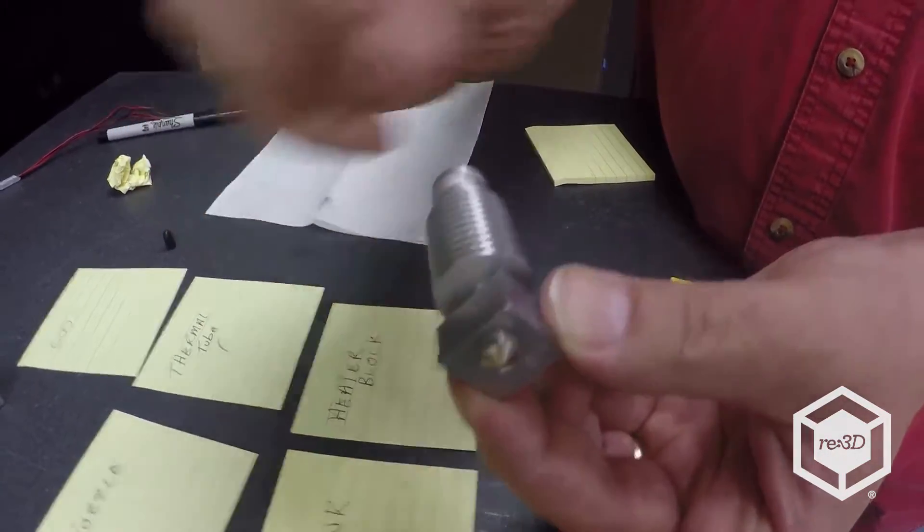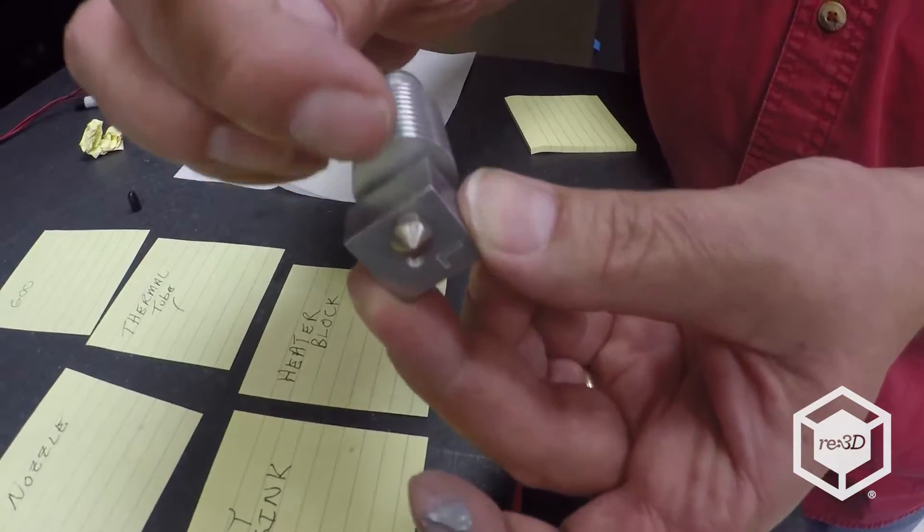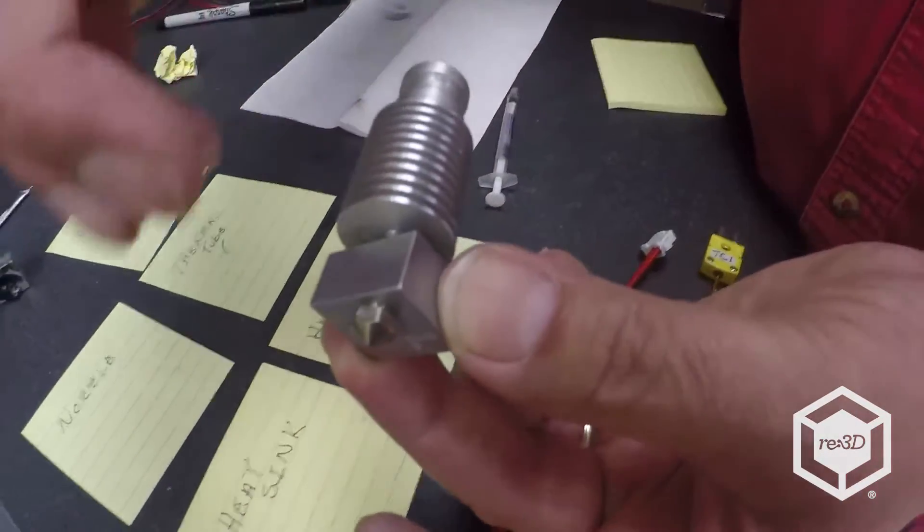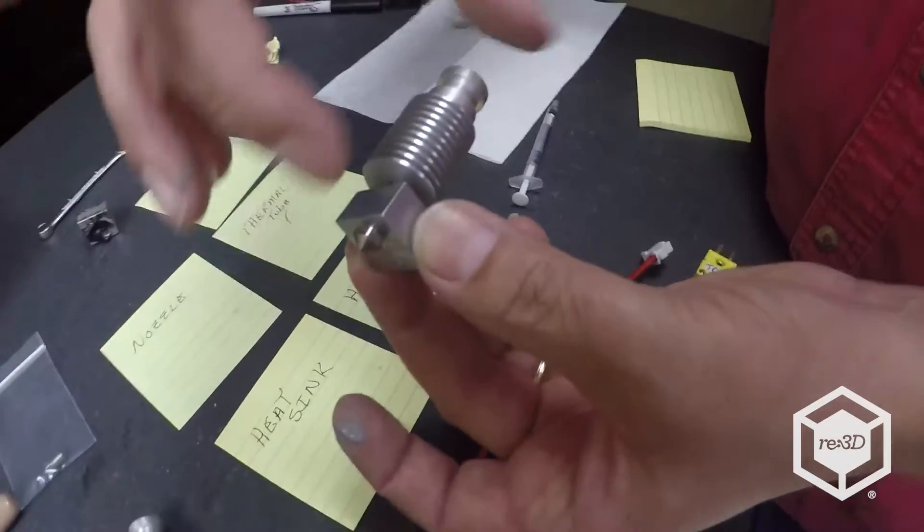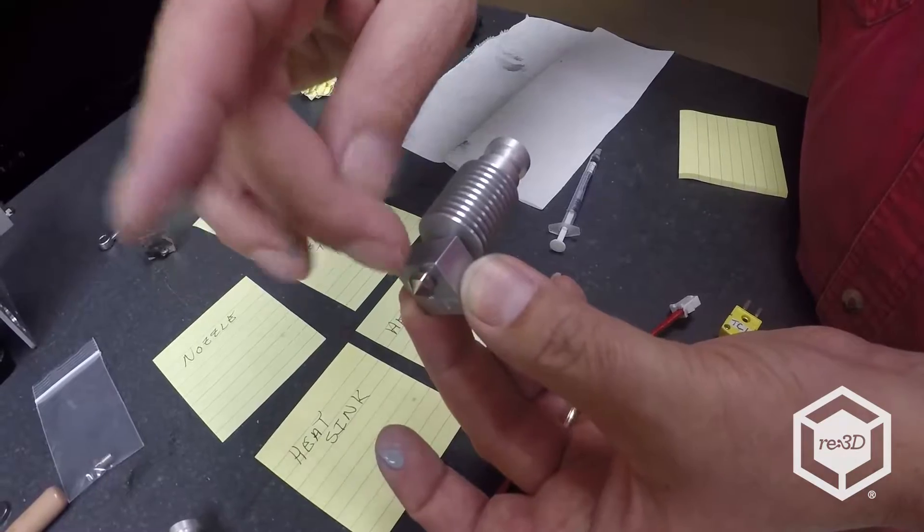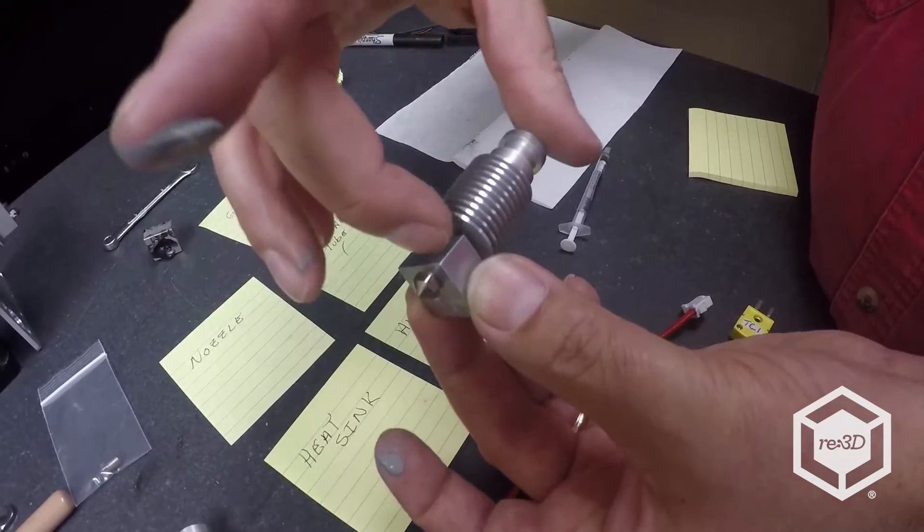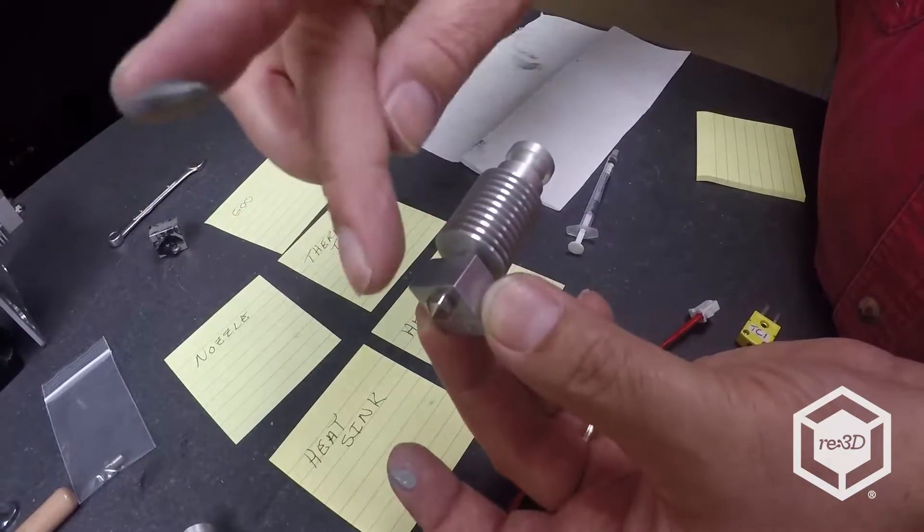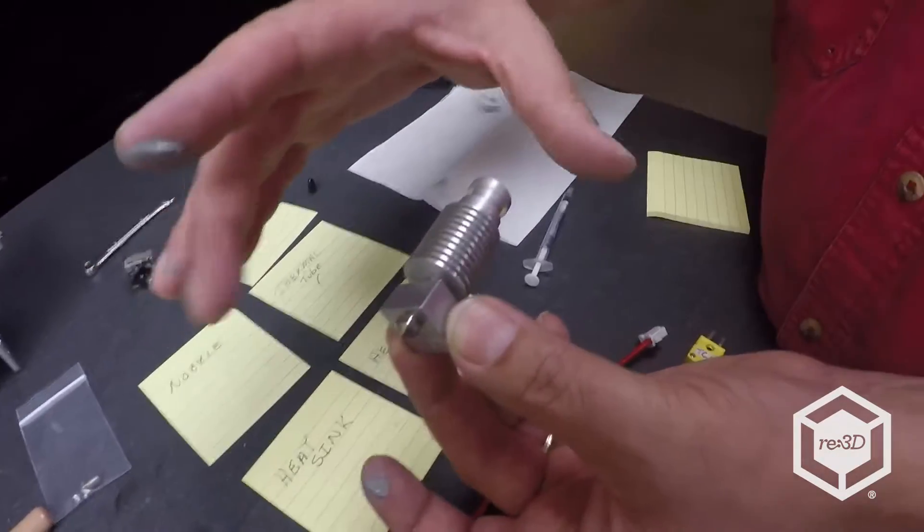Now where the heat block sits relative to the nozzle and the thermal tube is not as critical as you may seem because the overall dimension is defined by the inside of the thermal tube, the length of the thermal tube, and the length of the nozzle. So the heater block may be a little bit closer this way, a little bit further that way. That's okay.